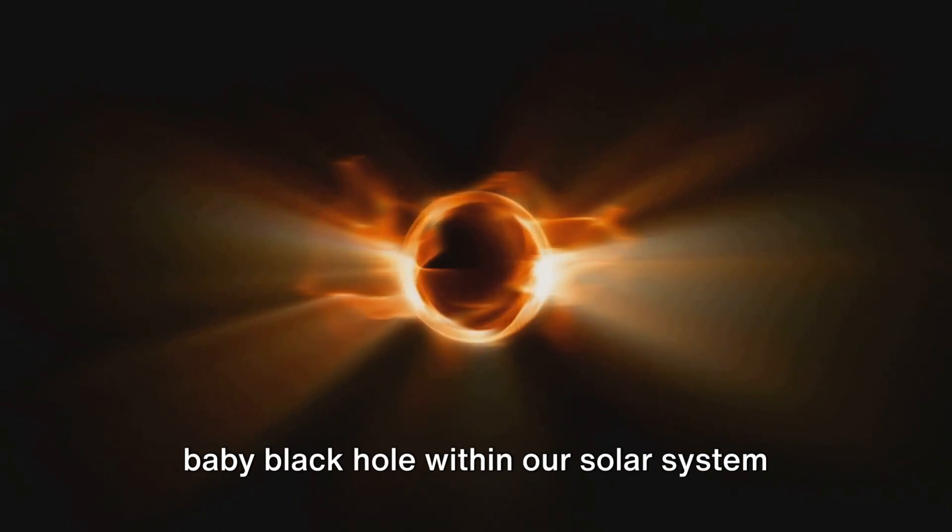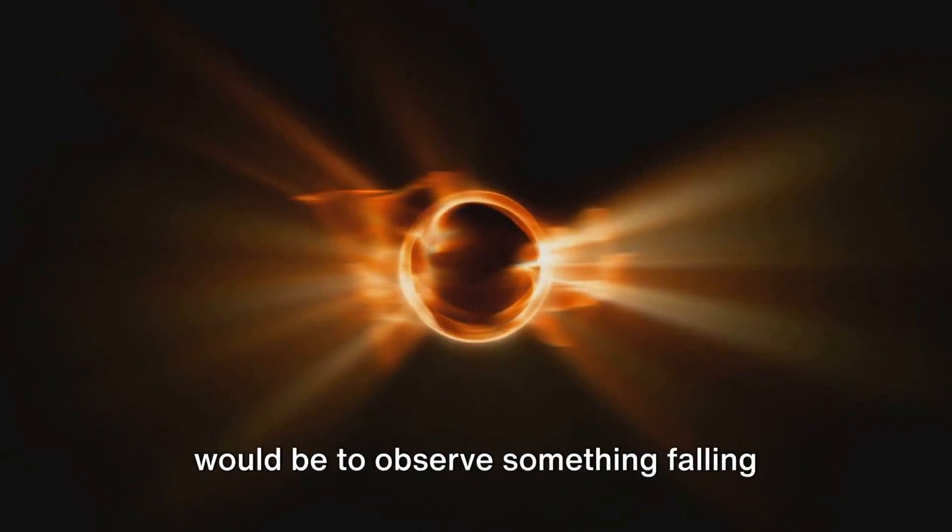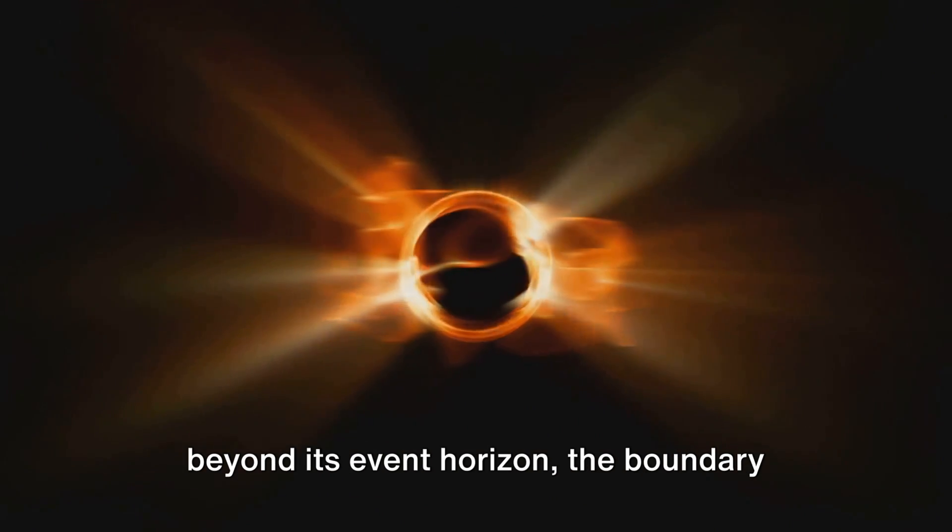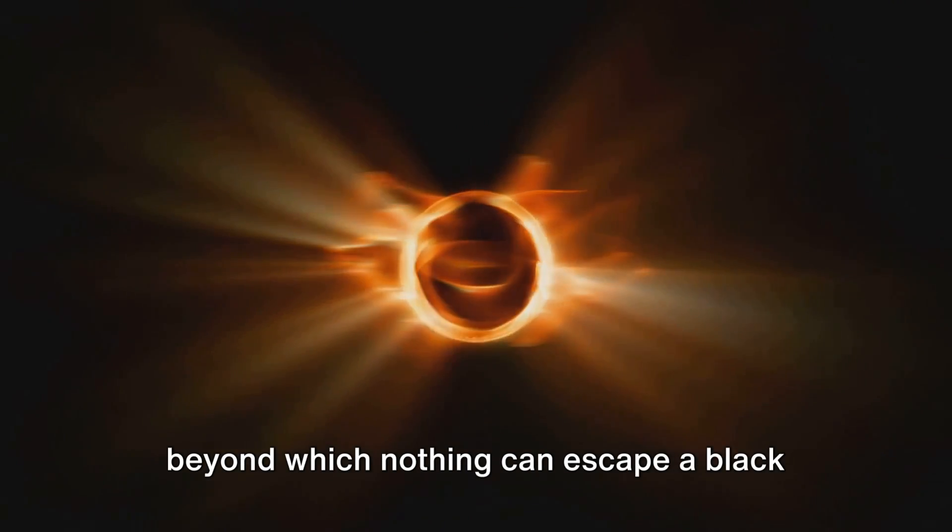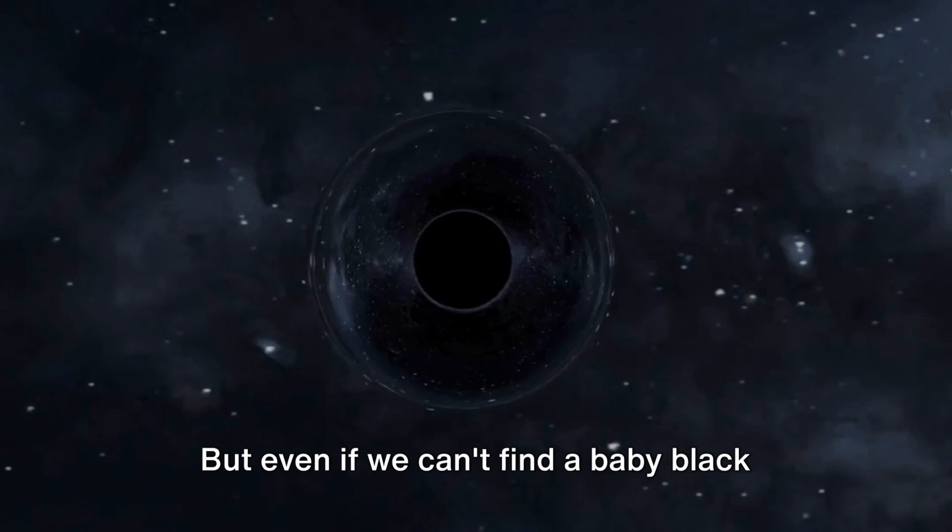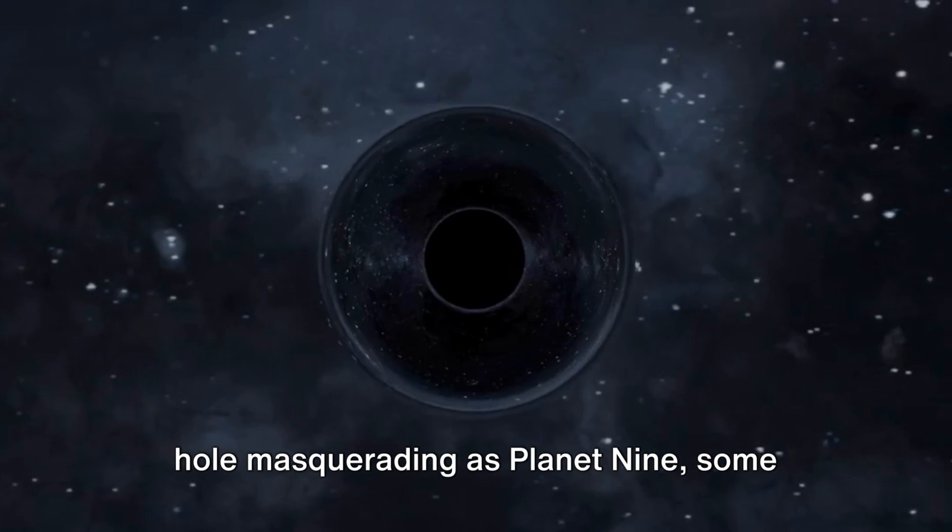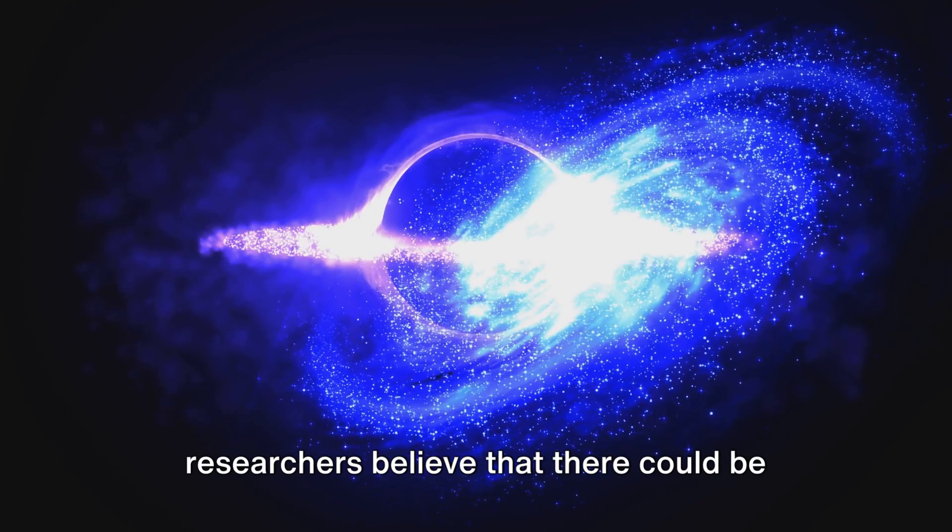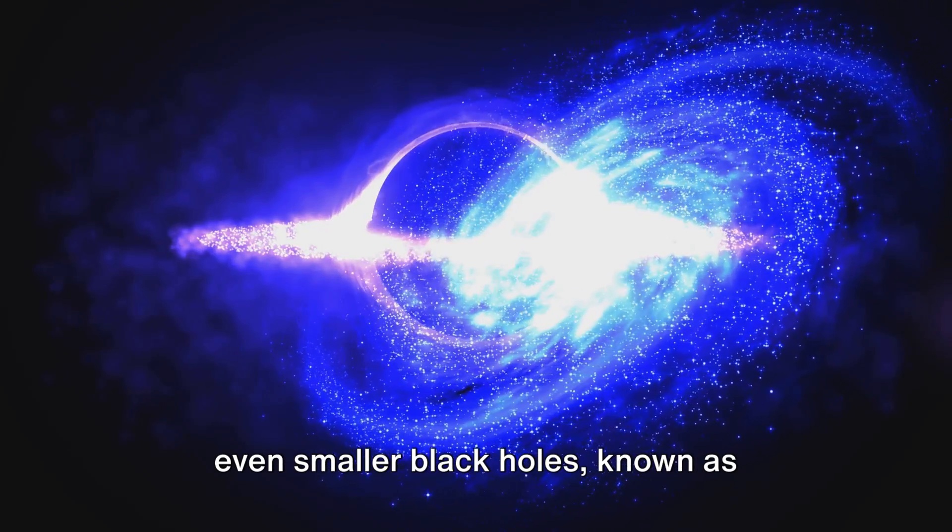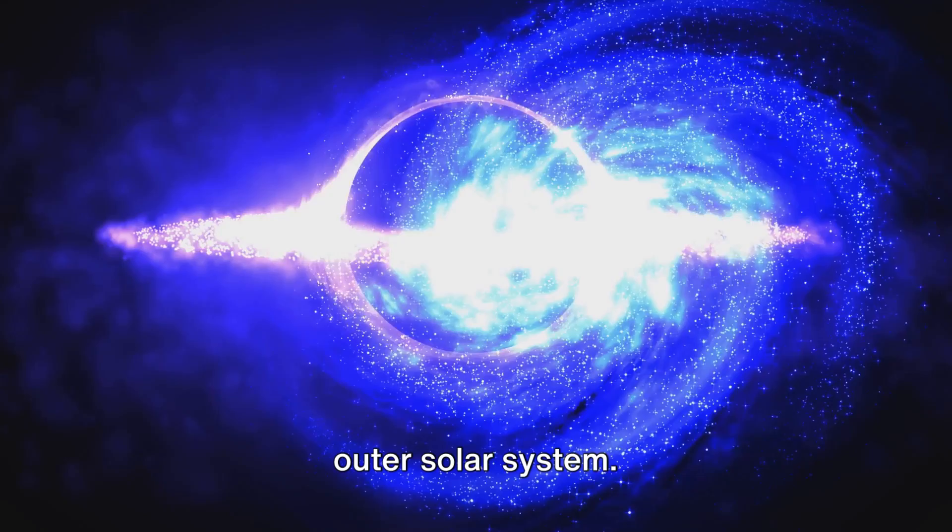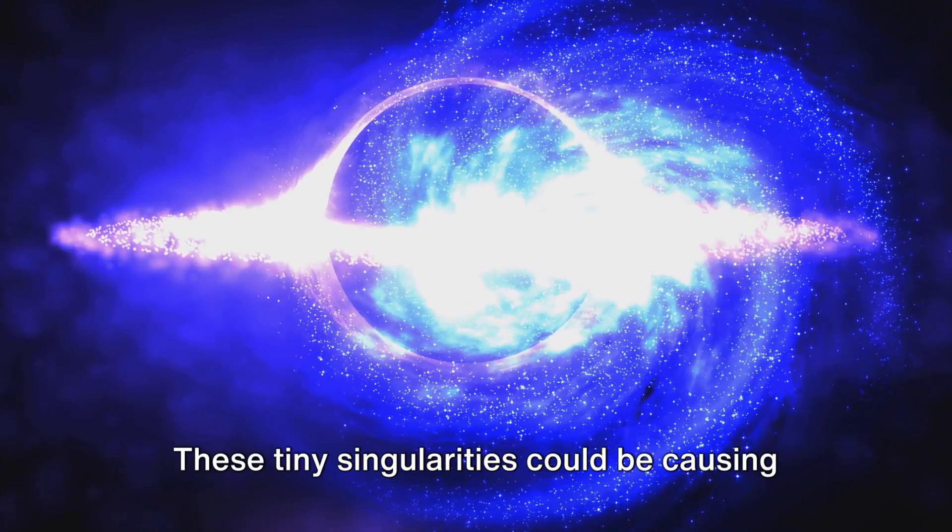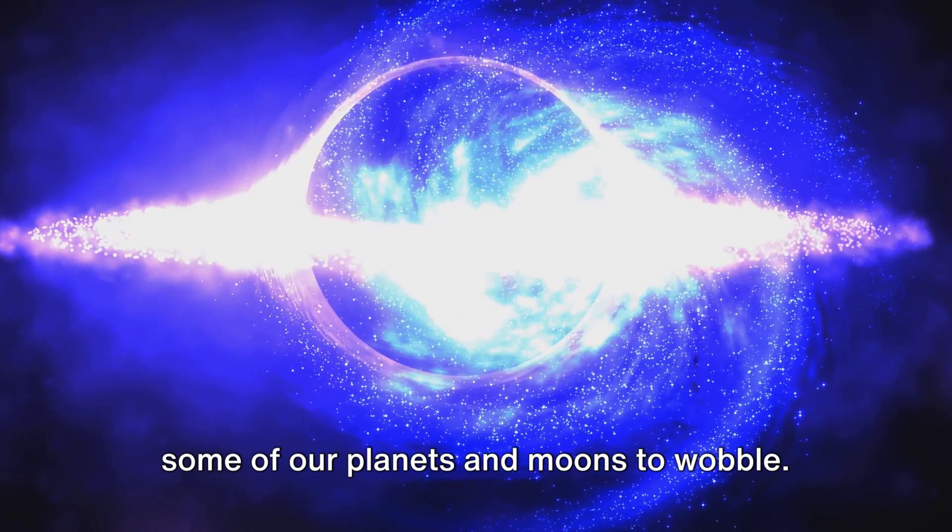Another way to prove the existence of a baby black hole within our solar system would be to observe something falling beyond its event horizon, the boundary beyond which nothing can escape a black hole's gravitational pull. But even if we can't find a baby black hole masquerading as planet 9, some researchers believe that there could be even smaller black holes known as primordial black holes lurking in the outer solar system. These tiny singularities could be causing some of our planets and moons to wobble.